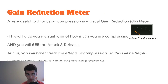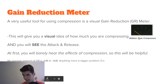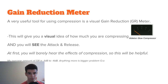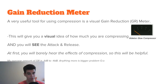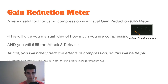Let's talk about the gain reduction meter now. This is a very useful tool for using compression — it's actually a visual. As you can see right here in this little meter, that's the Ableton Glue compressor, and it's going to give you a visual of how much you're compressing. Not only that, you're going to see your attack and release. This is going to be really helpful because at first you'll barely hear the effects of compression, so having that visual is really going to help. My average amount of gain reduction is negative 1 to negative 4 dB — anything more than that is usually a bigger problem. But again, there's no set rules.